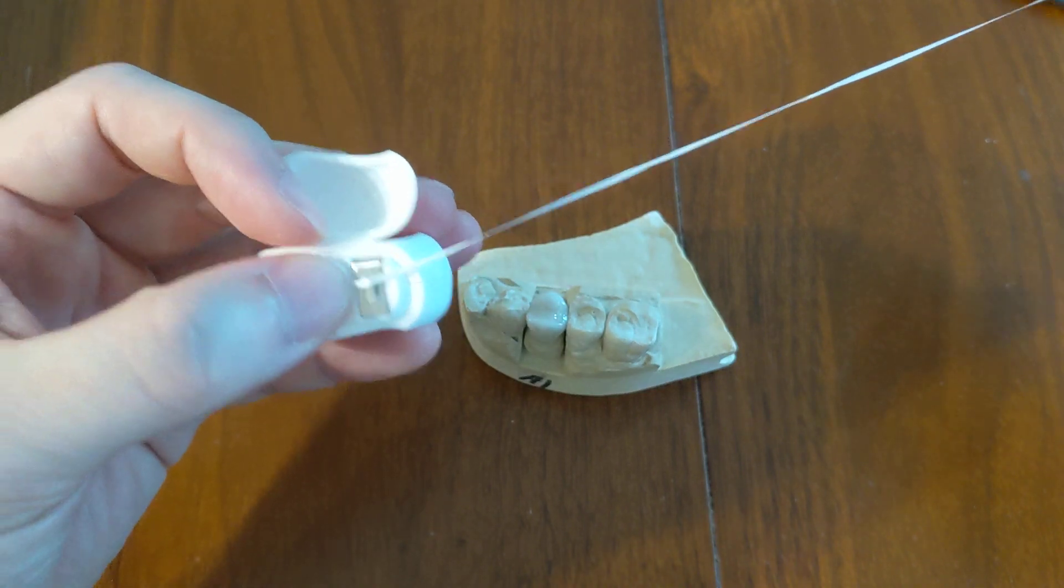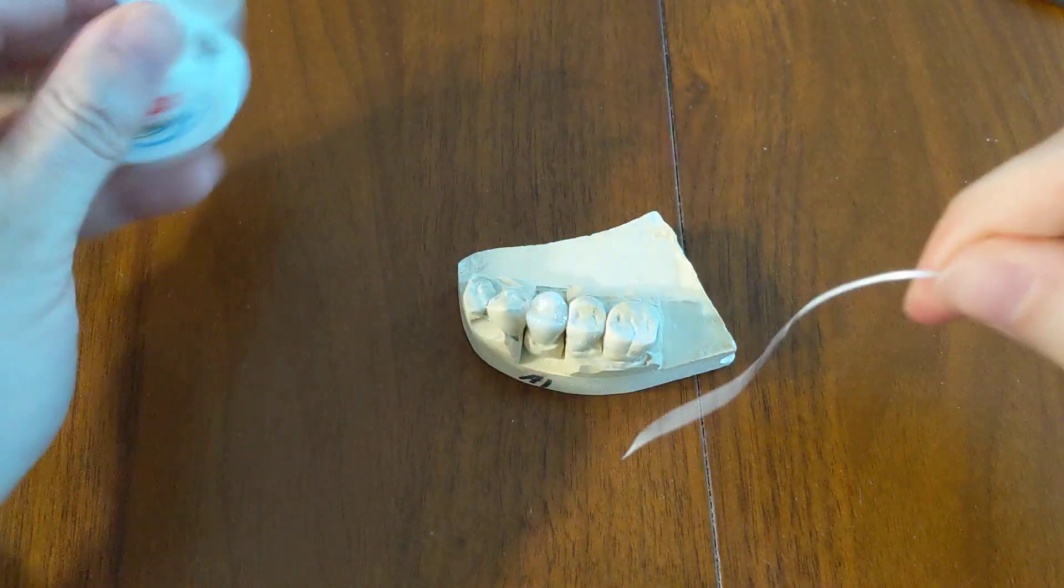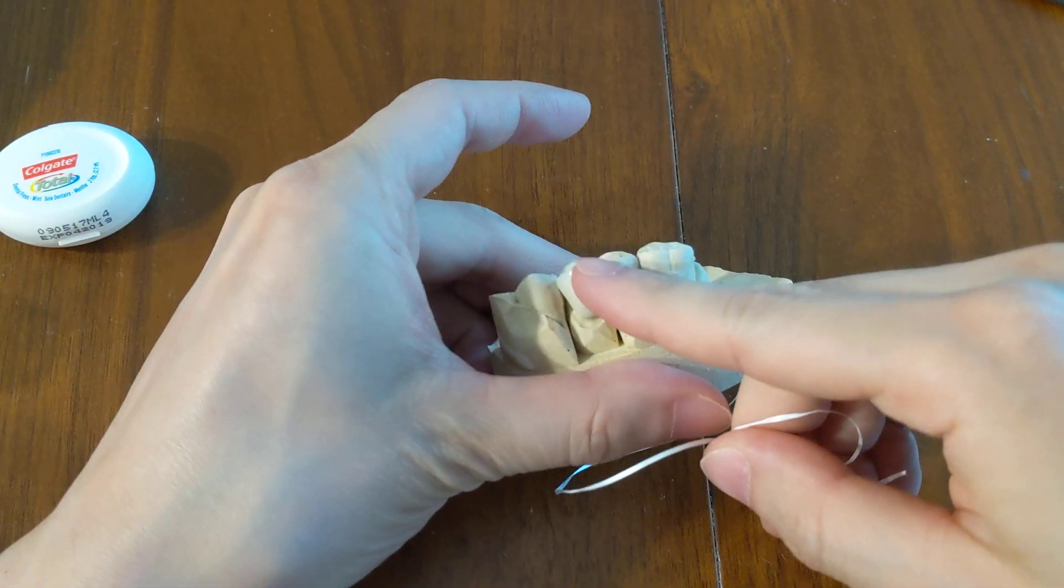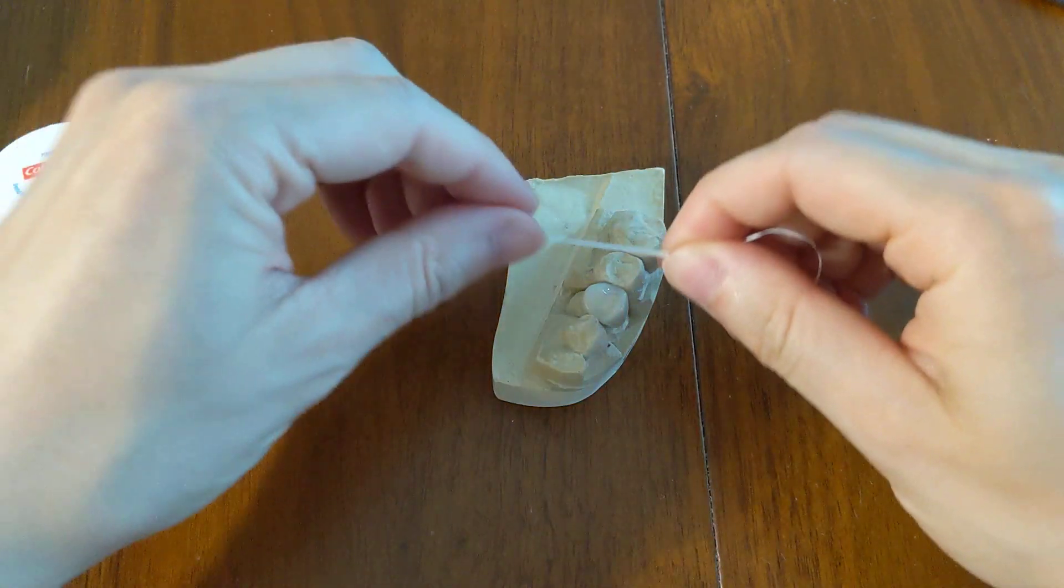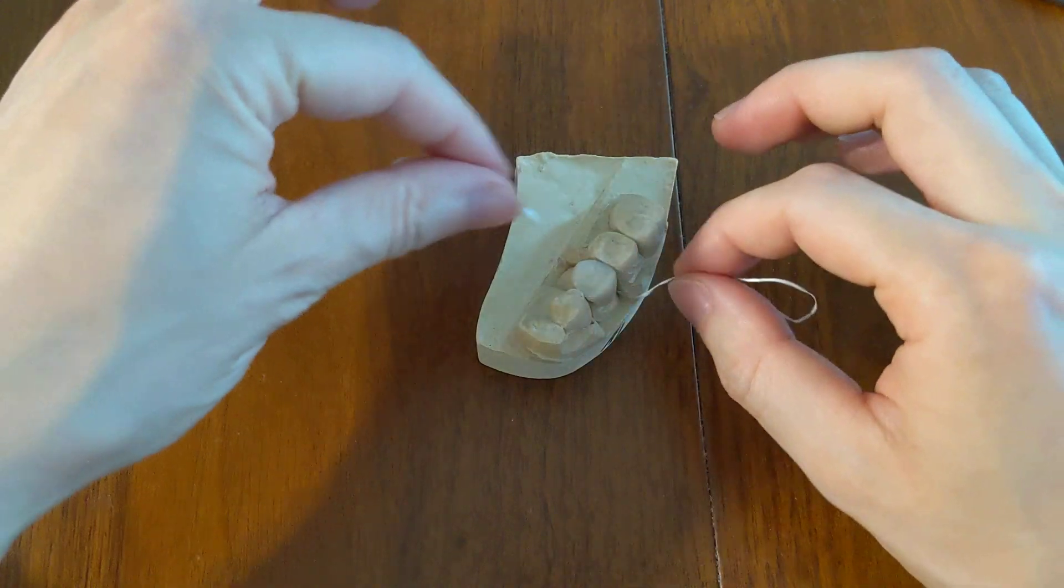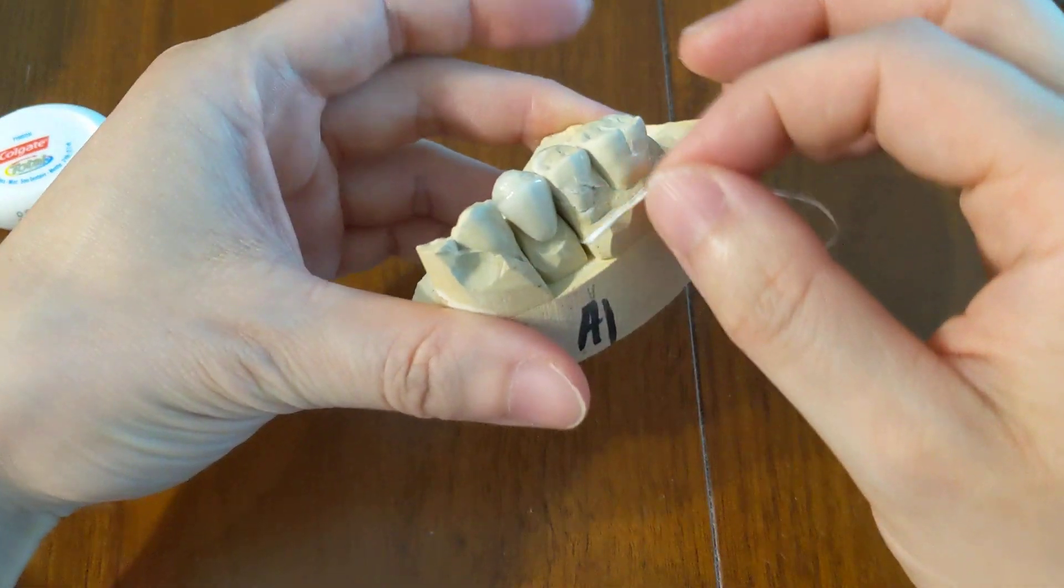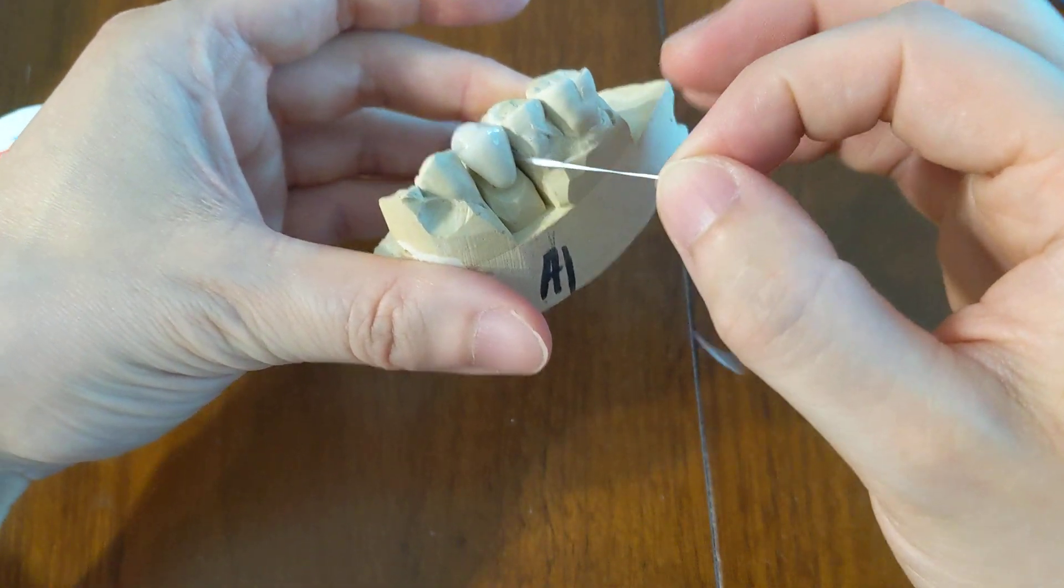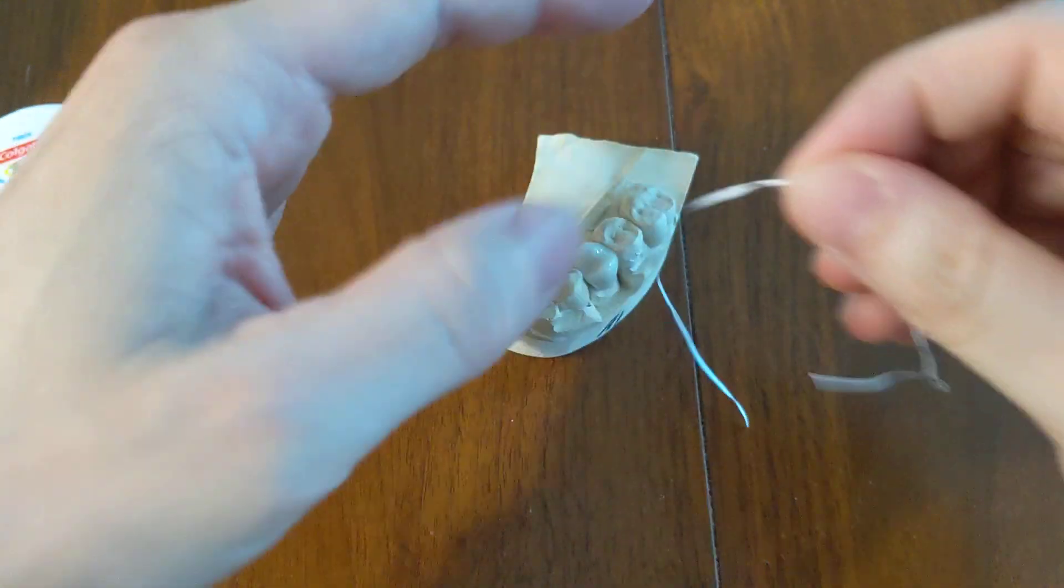The correct way to floss is, if you take a piece of floss, imagine that was a temporary crown. What you want to do is floss through. After you floss through, do not pull up. After you floss through, you want to pull out through the side.